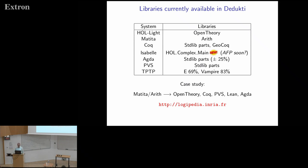What about the libraries we can handle currently? For each system, you can see what we can do. For HOL Light, which is based on higher-order logic, we can translate all HOL Light files, in particular the OpenTheory library. For Matita, a variant of Coq's system, we can translate some libraries like the arithmetic library. For Coq, currently we can translate parts of the standard library but not the complete standard library. We can also translate the GeoCoq library completely — GeoCoq is a library on Euclidean geometry which is quite big.